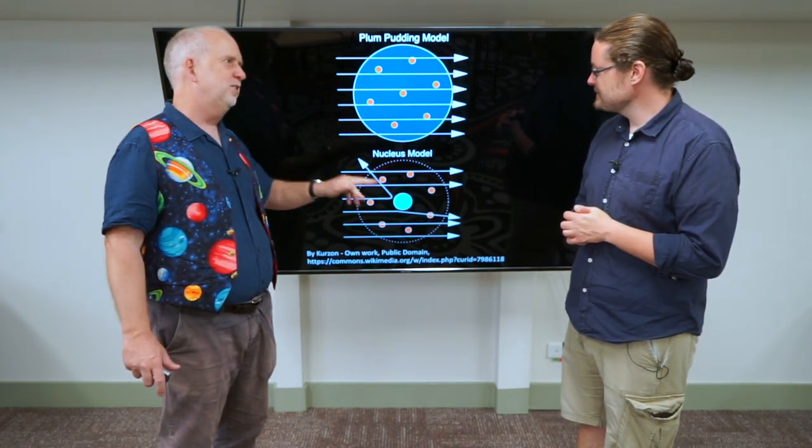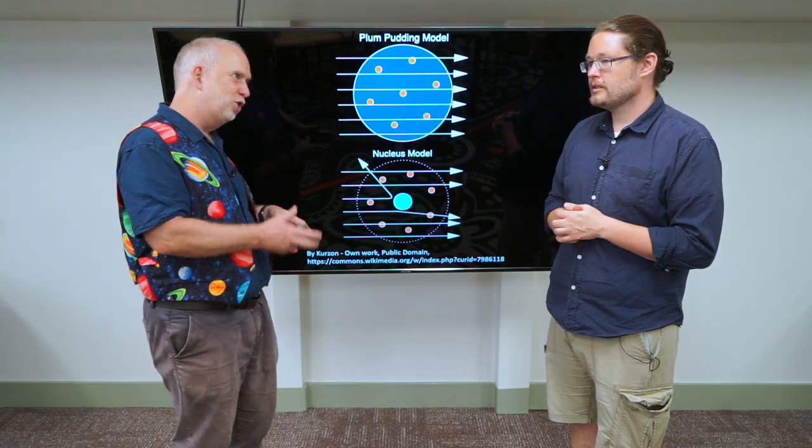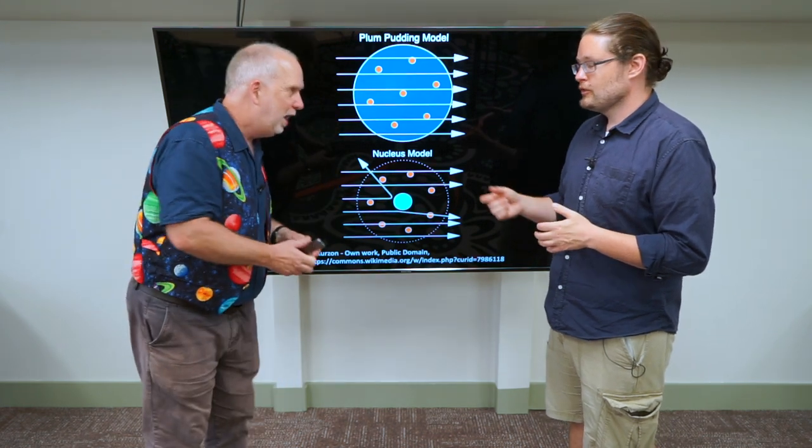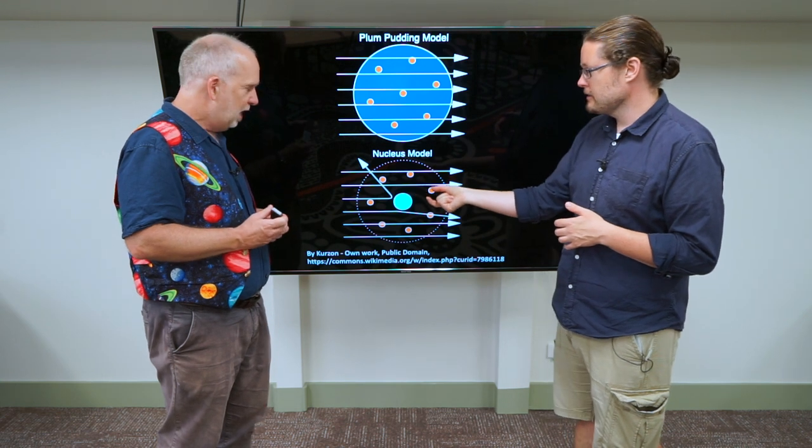So you needed something that was much heavier than electron, and had to be positively charged to repel the positive charge of these alpha particles that were coming in, and bounce it off. So there had to be a big, heavy, positive thing on the inside.